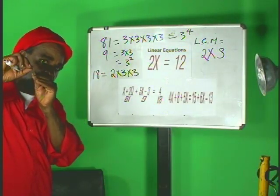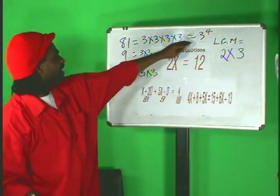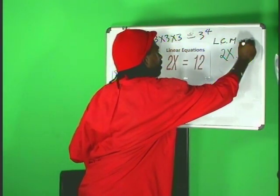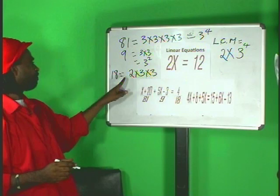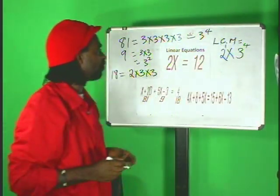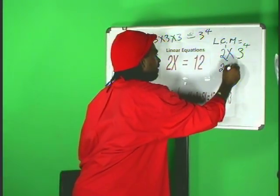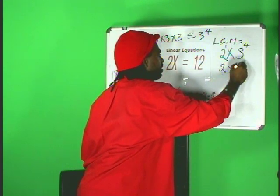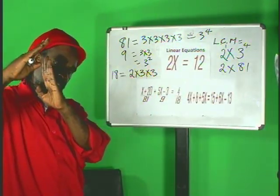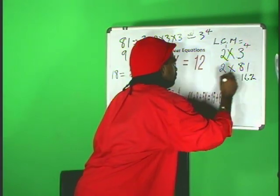You are going to take the product of these numbers to multiply. And thirdly, you are going to write the highest power for 3 throughout. The highest power for 3 is 4 and the highest power for 2 is 1 because 2 is 2 to the 1. What do you get here now? You get this as 2 multiplied by 3 to the 4th, which is 81.